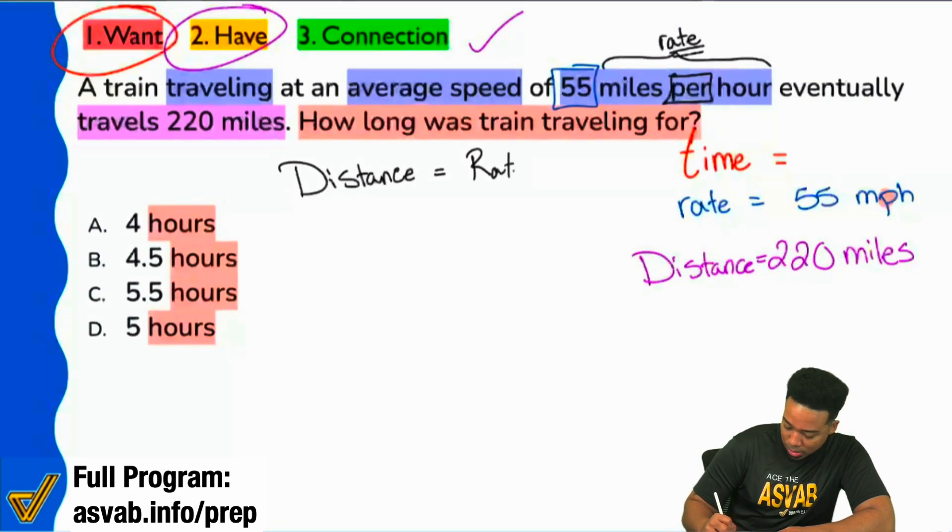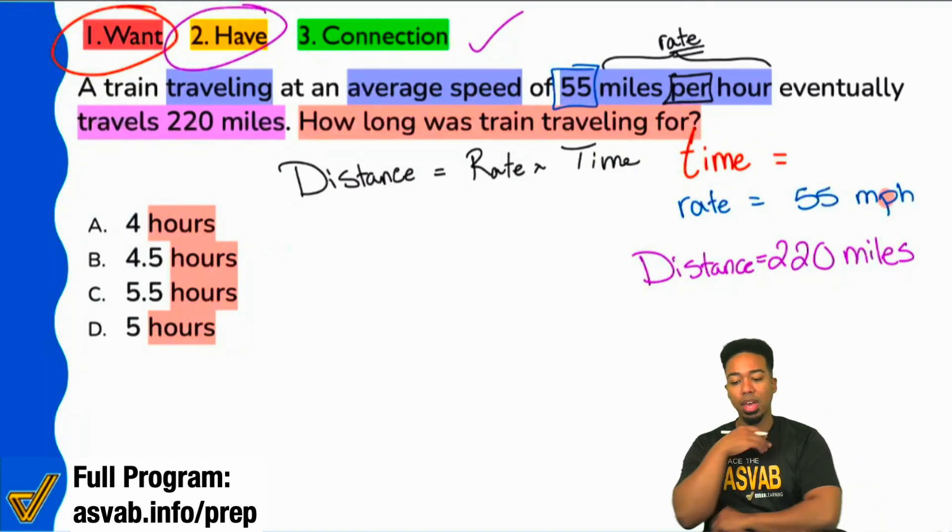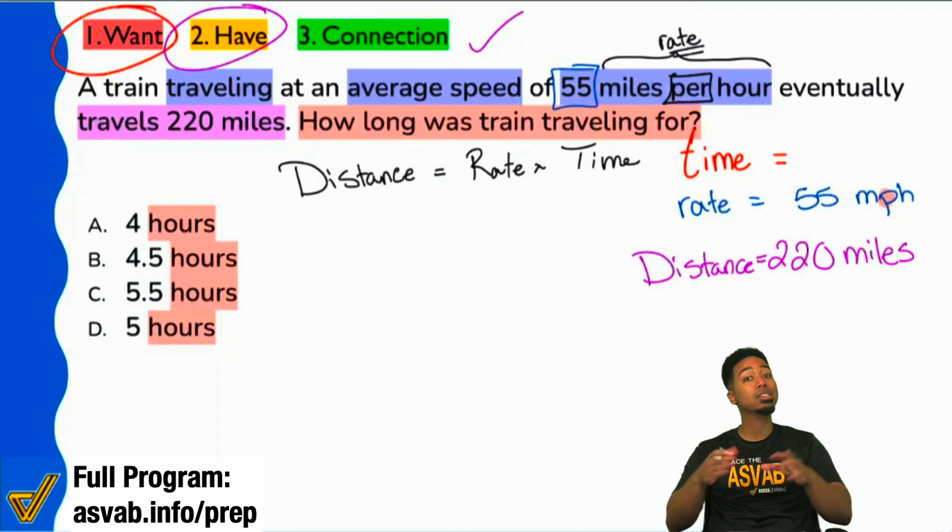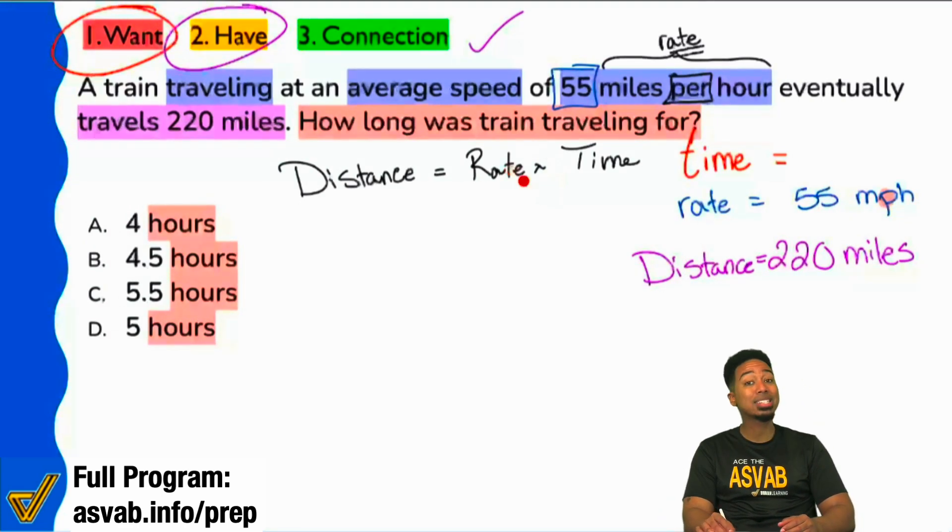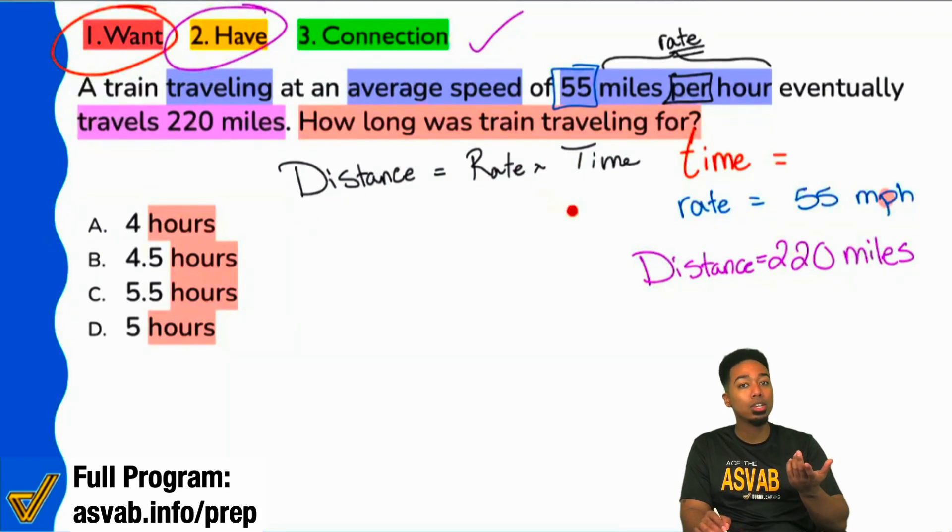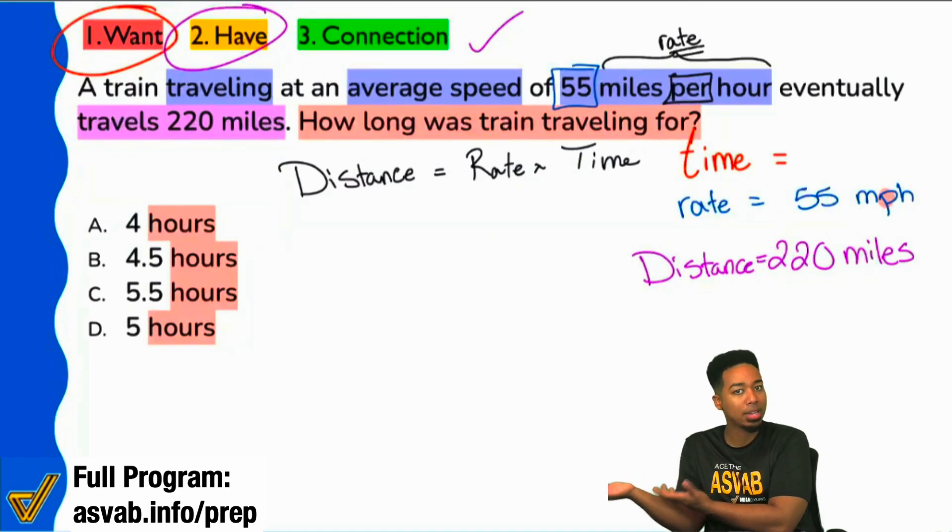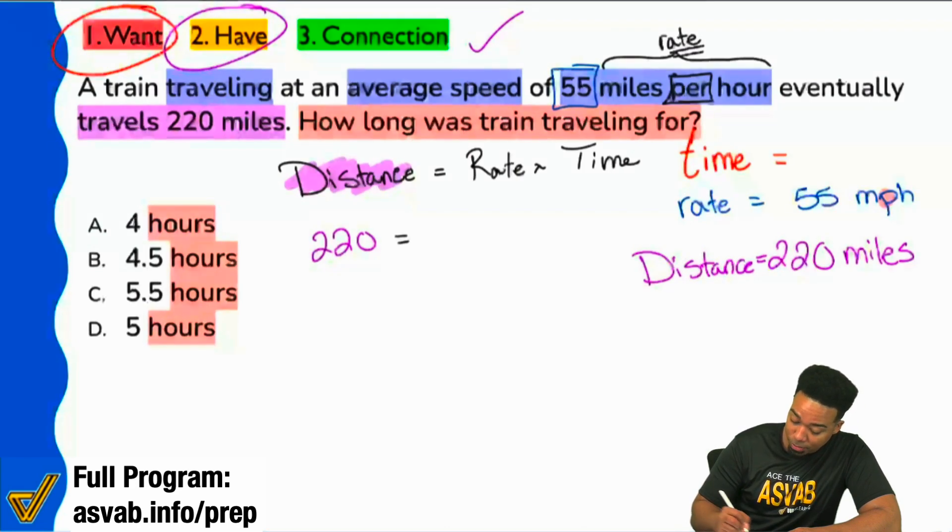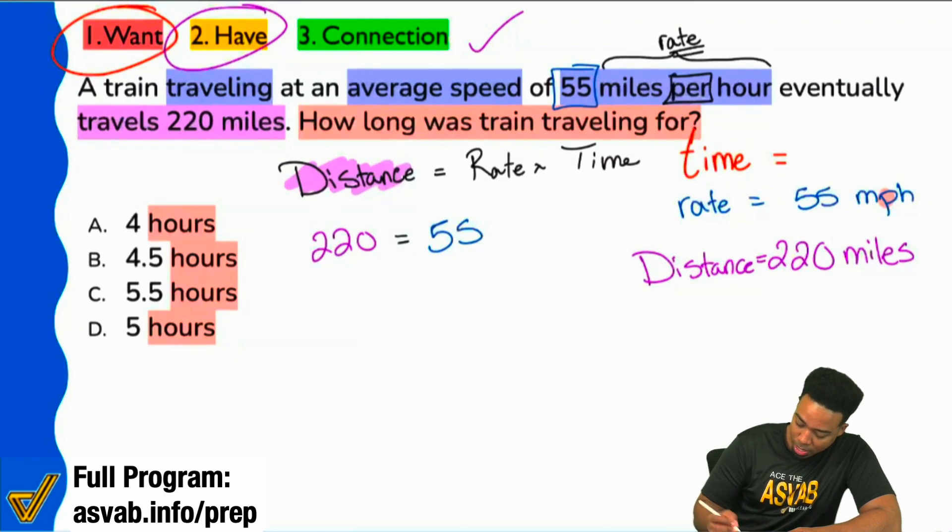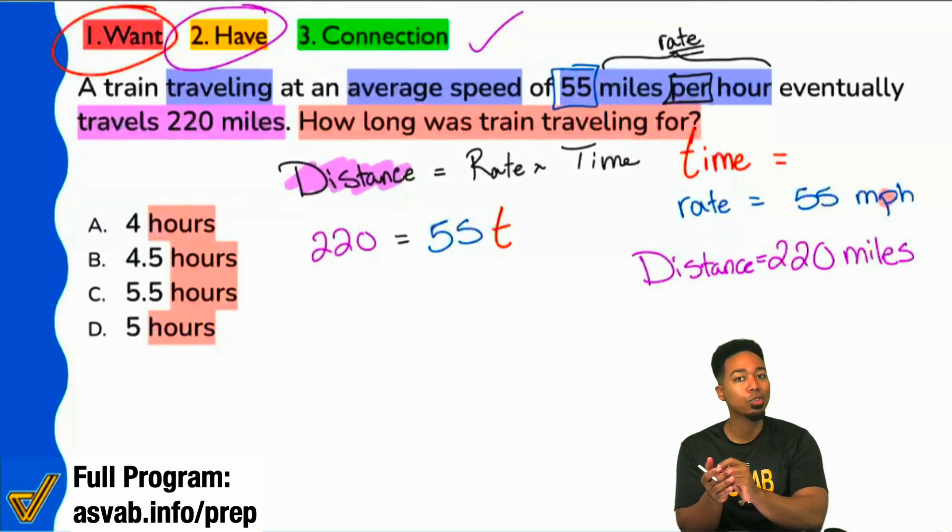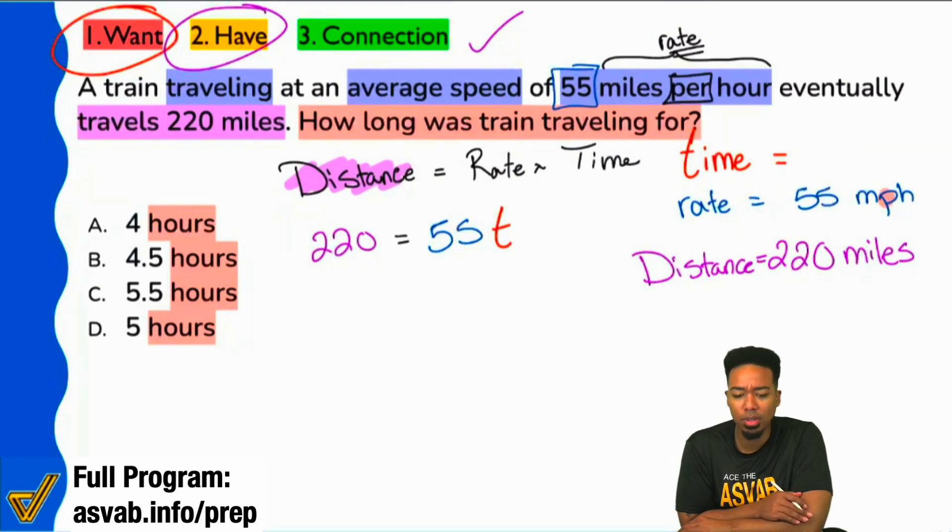Now what we'll do is we'll plug in the information we have and we'll let the formula tell us how we should solve it. Because although you see rate times time, it really depends on what you're looking for. The distance that we're plugging in right here, that's going to be 220 miles. Then, the rate that we were given was 55 miles per hour. And we will multiply that by time. Do we agree with what I plugged in? Plugged in 220 for distance, 55 for rate.